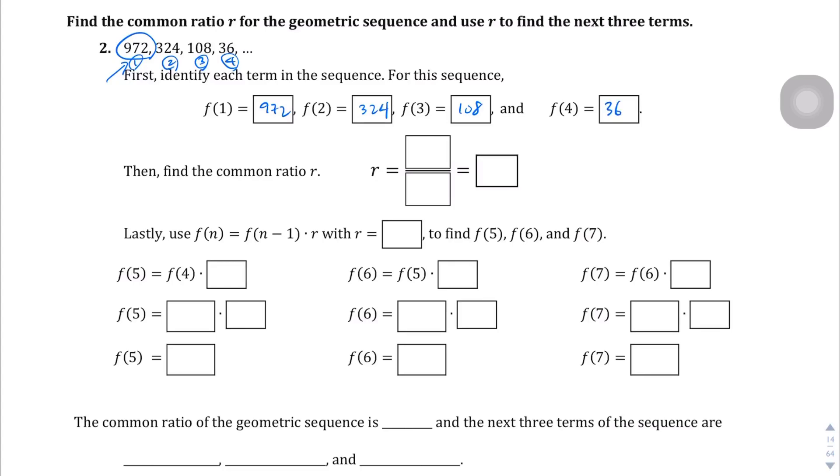And to find the ratio, again, we're going to take two consecutive terms. In this case, we're going to take the first two and so we're going to divide the second term, 324, by the first term, 972. And so, let me pull up the calculator here. 324 divided by 972 gives me 0.3 repeated. So in this case, R is going to be 0.3 repeating. And you can also use the fraction 1/3, which is the same thing. And in fact, 1/3 would probably be more accurate.